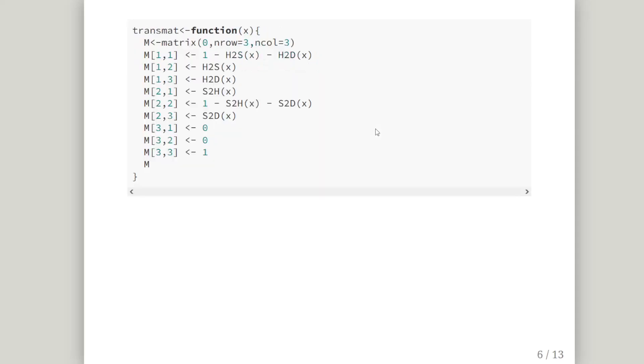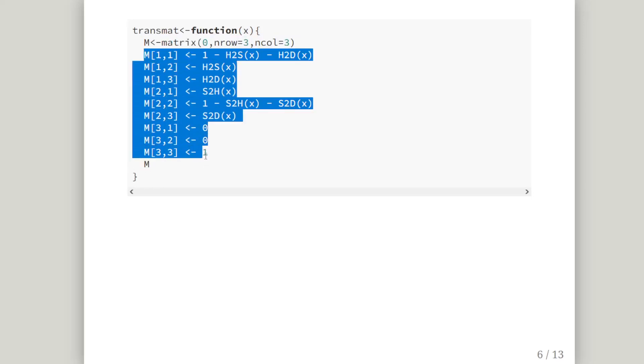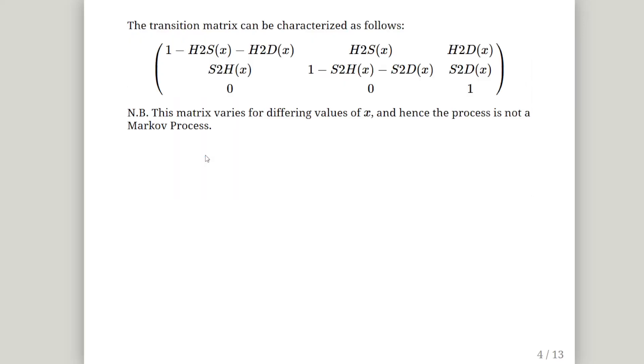Now this is us setting up the transition matrix, trans-mat. I set up a function of x and to start off with, I am setting up a 3 by 3 matrix which just has zeros. And then I'm going to populate my matrix with all of the transition probabilities.